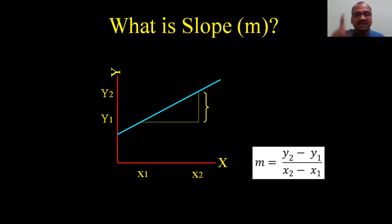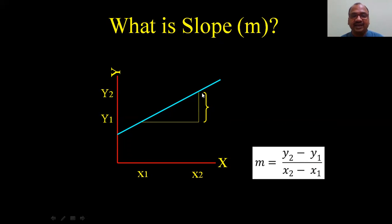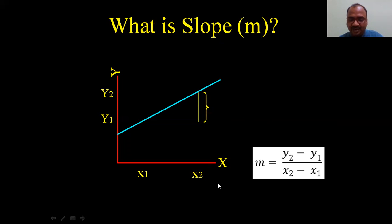That difference is called y2 - y1. If you draw a line, take any two points on the straight line — one point here and one point there — draw the vertical difference y2 - y1, and the horizontal difference x2 - x1. From these values you calculate the slope.